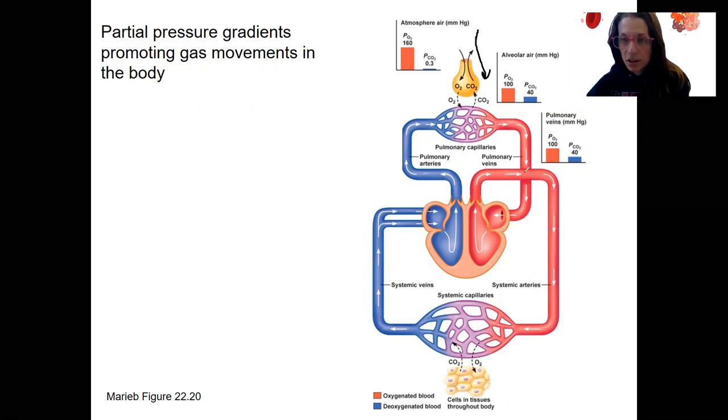As we go through systemic circulation, there are going to be no changes in partial pressure until we have gas diffusion occur at the systemic capillaries. So if we added in the systemic arteries right here, the partial pressures, you should be able to know what those are. Here they are. Same as before. We haven't changed partial pressure. No gas diffusion has occurred. No changes in partial pressure have occurred.